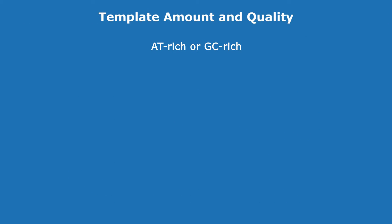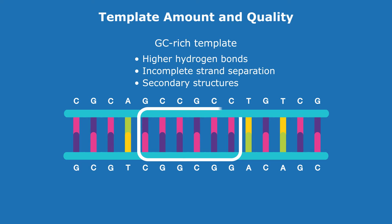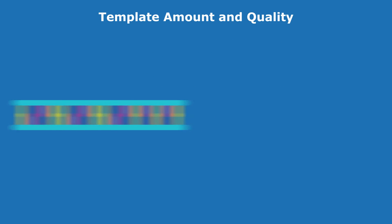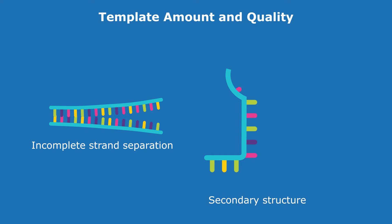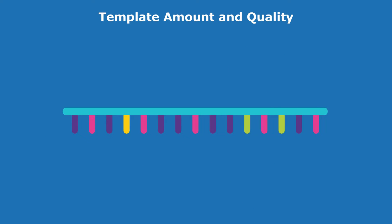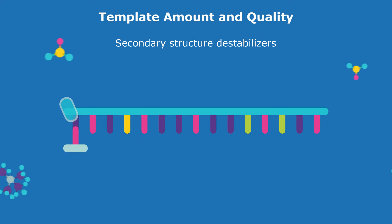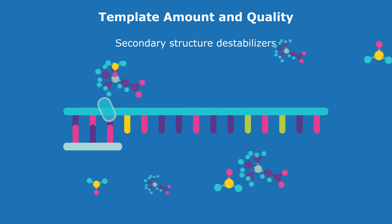The quality of the template in terms of its complexity can play a crucial role in the outcome of the PCR. For example, a GC-rich template has significantly more hydrogen bonds than an AT-rich template. This can result in incomplete strand separation or secondary structure formation that inhibits the polymerase and gives rise to premature termination. To overcome this, scientists can add secondary structure destabilizers, such as DMSO or betaine, to their reactions.